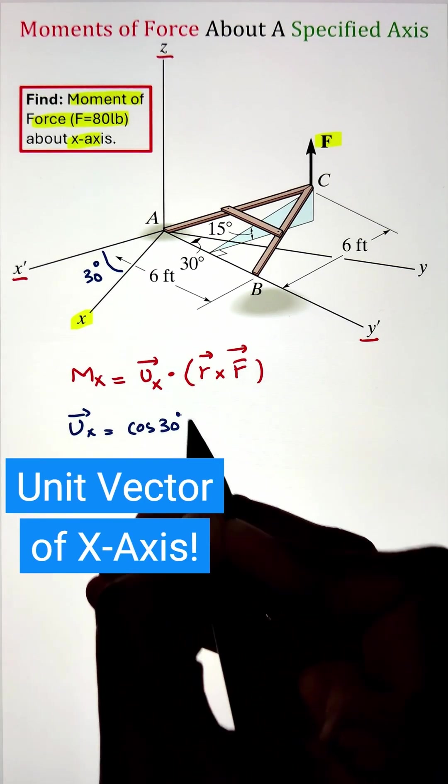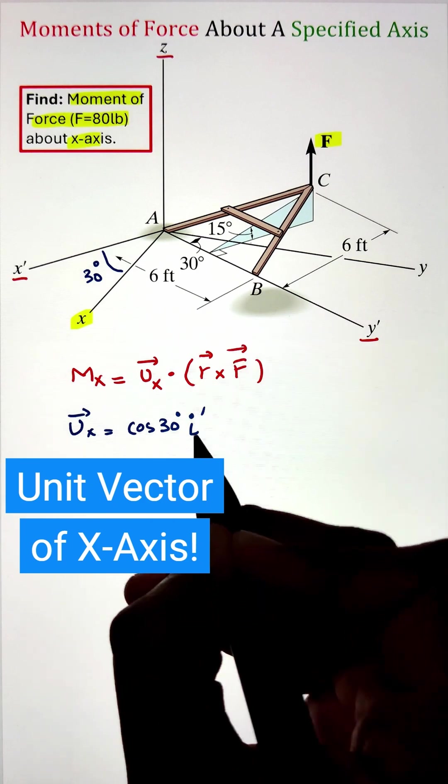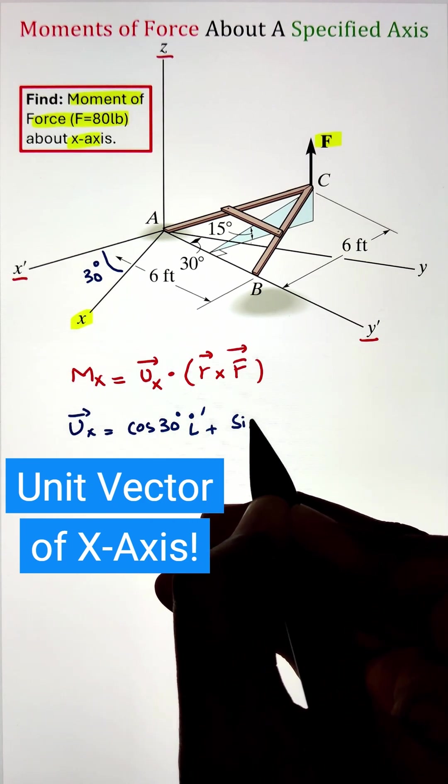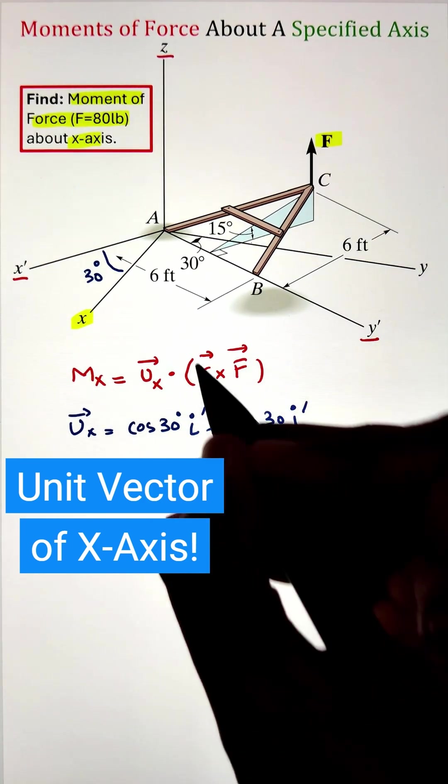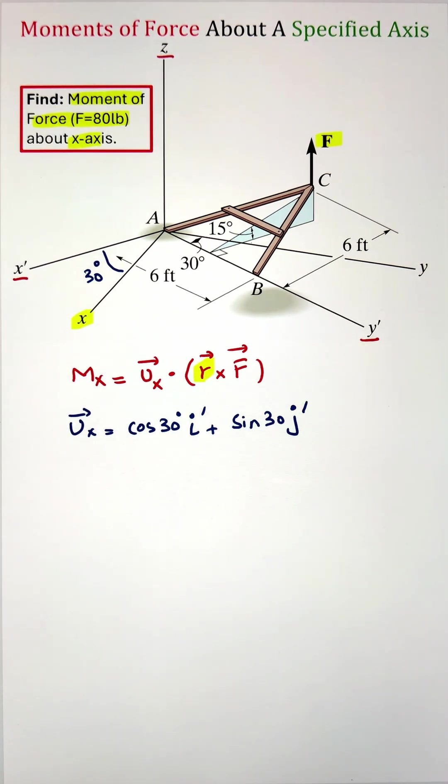Next, let's identify the unit vector of axis x. Since our reference axes is x prime and y prime, I need to project our axis x along x prime and y prime, which we can do by taking the cos 30 and sin 30 functions respectively.